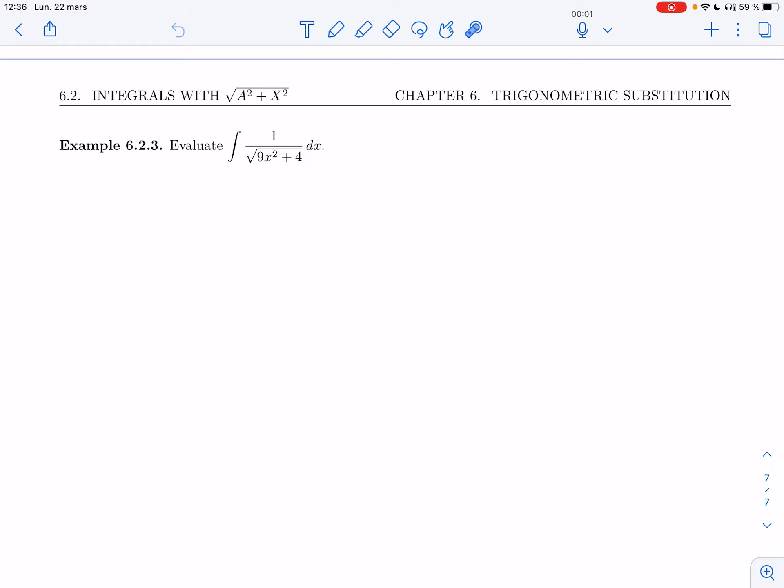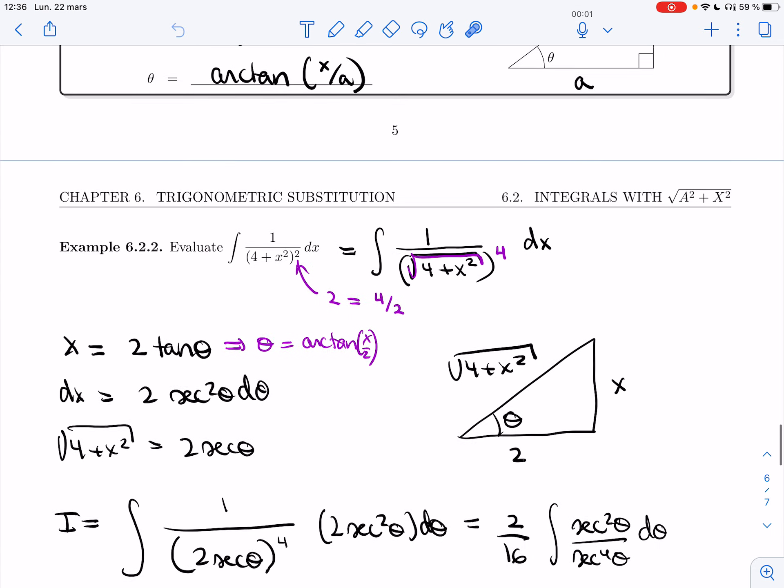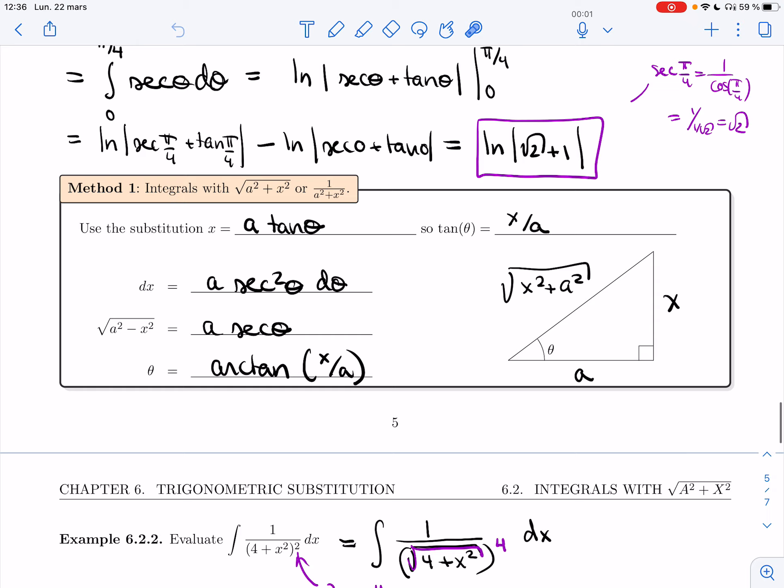Now I want to show you this example because although it doesn't look exactly like what we had in our method, we don't have a square plus x squared, we have an extra constant here. You can actually use the idea of building a triangle to solve it as well.